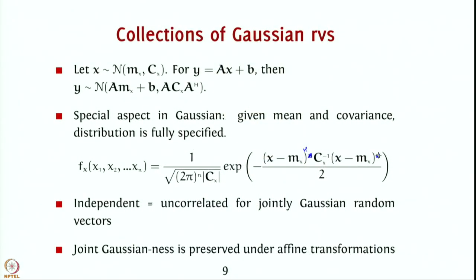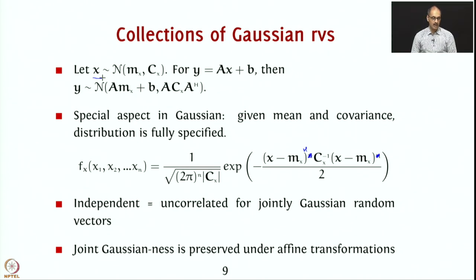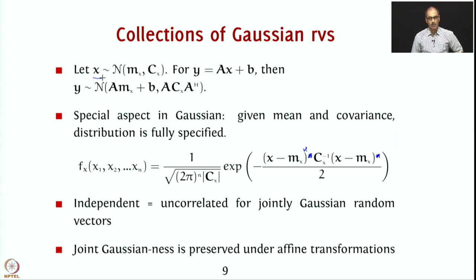We were dealing with collections of random vectors, particularly Gaussian random vectors. If you have a random vector x consisting of a column vector x1, x2 up to xn which are random variables that are jointly Gaussian — one important aspect is that a jointly Gaussian random vector has a special definition: it is one where any linear combination of the entries results in a Gaussian random variable.